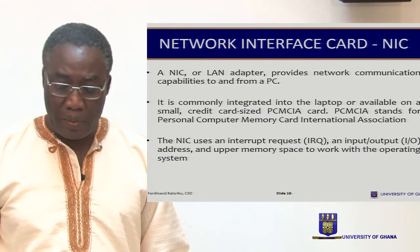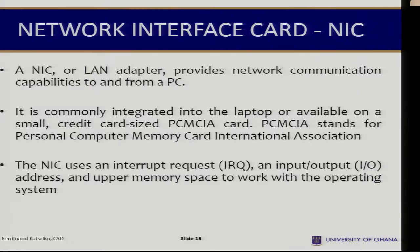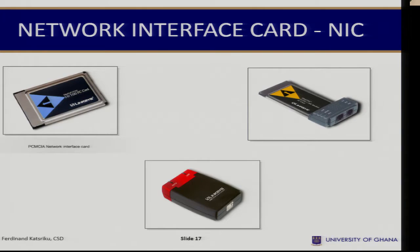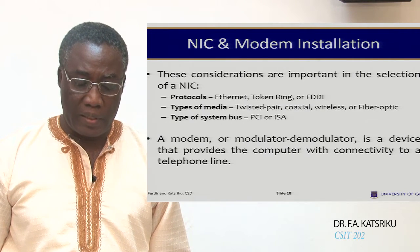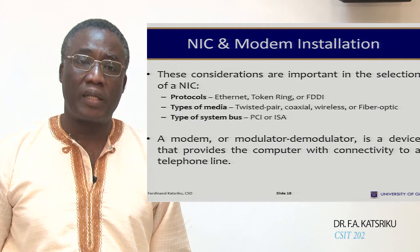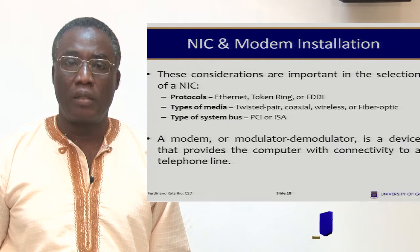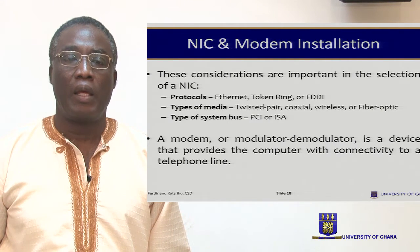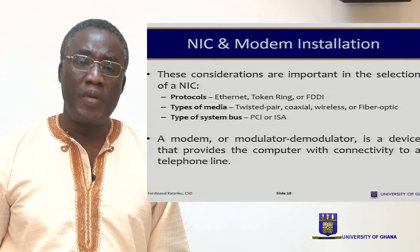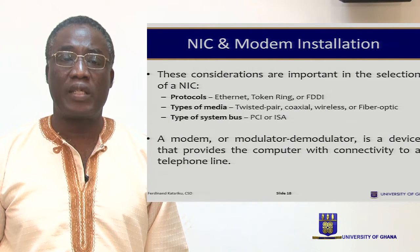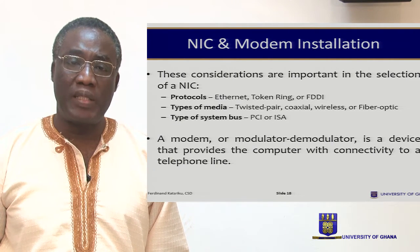These are examples of various types of network interface cards. When purchasing a network interface card, consider the following features: protocols — is it Ethernet, Token Ring, or FDDI? Note that FDDI is no longer widely used. The type of media it is going to use — whether it is twisted pair, coaxial, wireless, or fiber optic. The type of bus system — whether it is PCI or ISA.